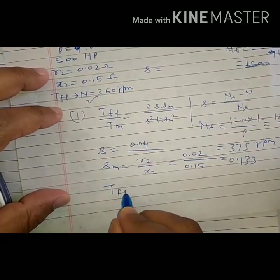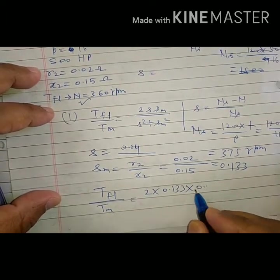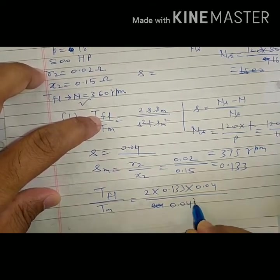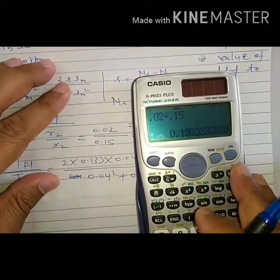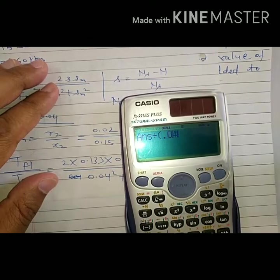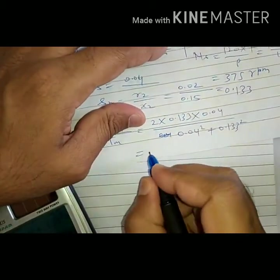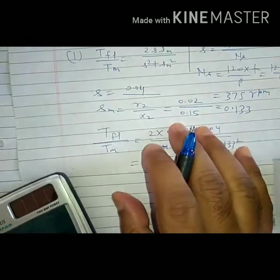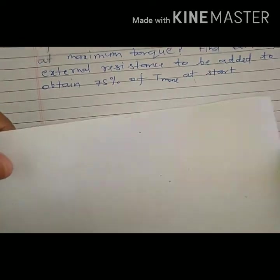Therefore we can find this ratio as TFL by TM equal to 2 times 0.133 times 0.04 by S squared 0.04 squared plus 0.133 squared. This comes as 0.455, which is the ratio.